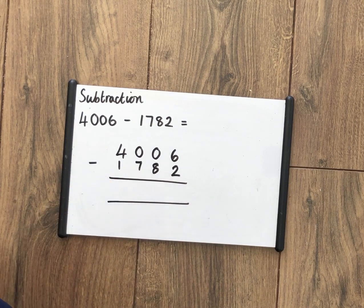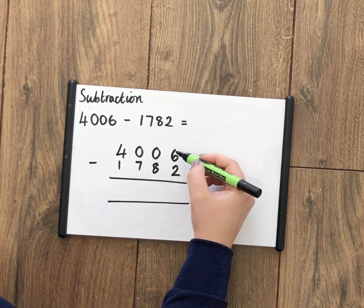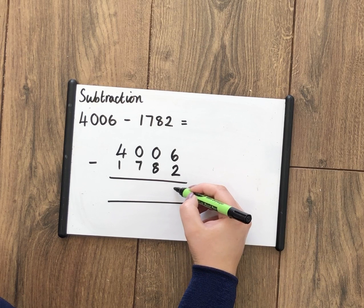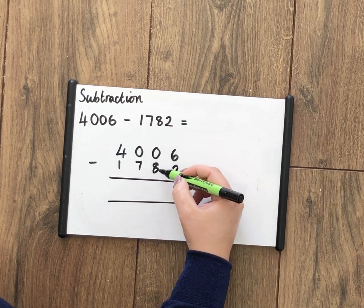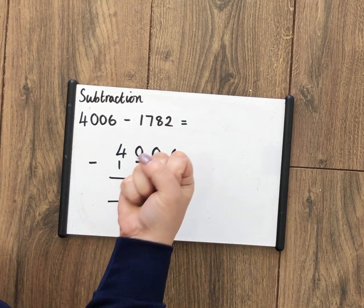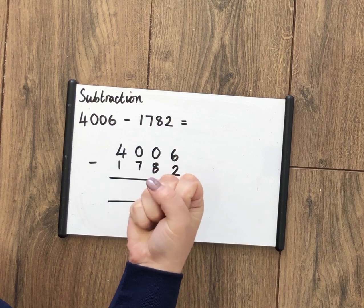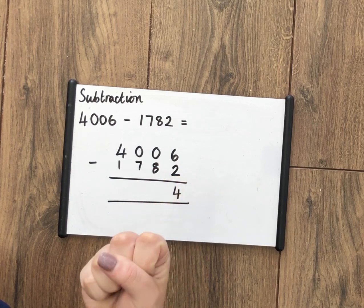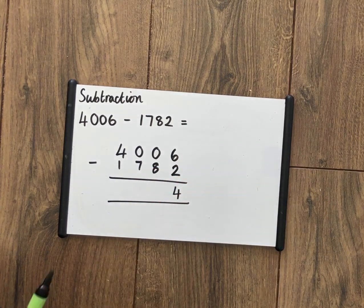Put in that it's a subtraction as well. So 6 take away 2 is 4. 0 take away 8. Remember, if I have nothing and I want to try and take away 8, can I do it? The answer is no. I can't do it. I can't take away, so I want to borrow from my neighbor.